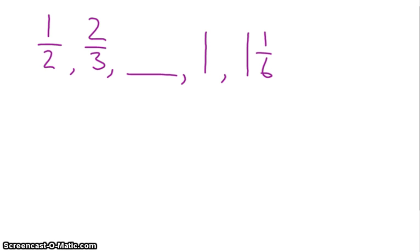So the first thing I notice is that my general trend is that I'm increasing. I'm starting with 1 half, and I'm ending up at 1 and 1 sixth, which is greater than 1 half. So each of the numbers I have here increases from what comes before it.